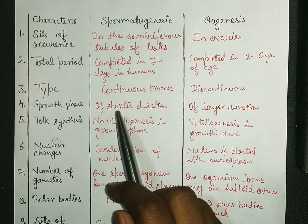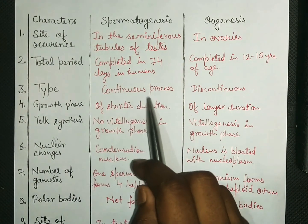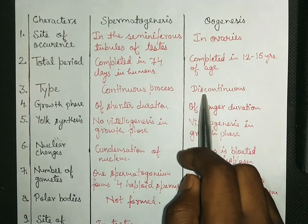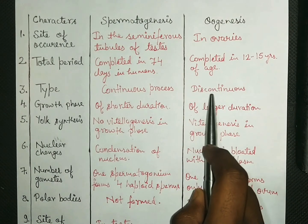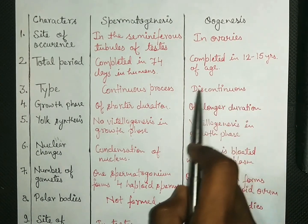Spermatogenesis is a type of continuous process because it doesn't halt anywhere. But oogenesis is a discontinuous process because we saw that during birth also it gets halt at meiosis first and in meiosis two also it gets halt. So it's a discontinuous process.